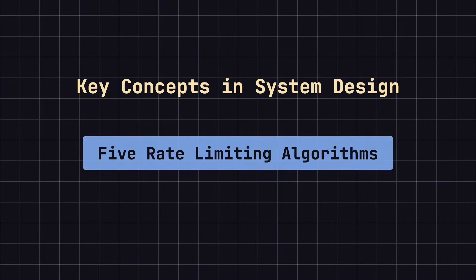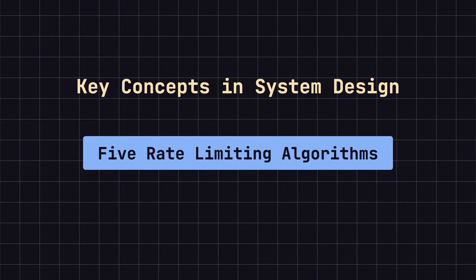Hello, everyone. Welcome back to the Key Concepts in System Design series. In modern computer systems, rate limiting is an essential technique that helps prevent system overloads and ensures stable service, especially in high-traffic situations.